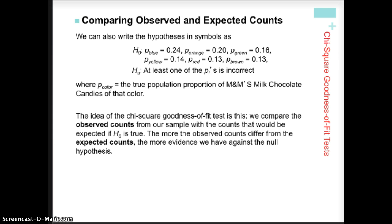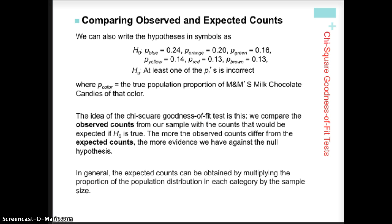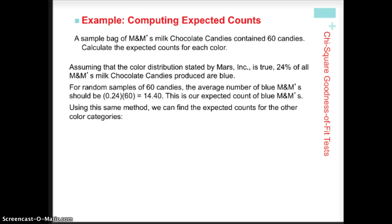So this idea of comparing our sample observed values to the expected counts is going to be really the bread and butter of our chi-square. So we're going to first calculate how many we should expect. Now if you think about, we're supposed to have 24% of blue. Our sample size was 60. So in order for us to calculate in a perfect world how many blues we should have gotten, what we're going to be doing is multiplying 0.24 times our sample size of 60.